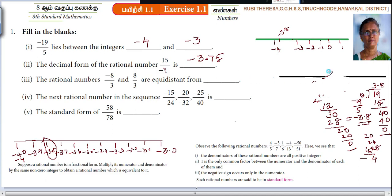Just one second. So equidistanced from. What you should do? Just you put 0 here. Here 8 by 3. Here minus 8 by 3. Both are equidistanced from 0.